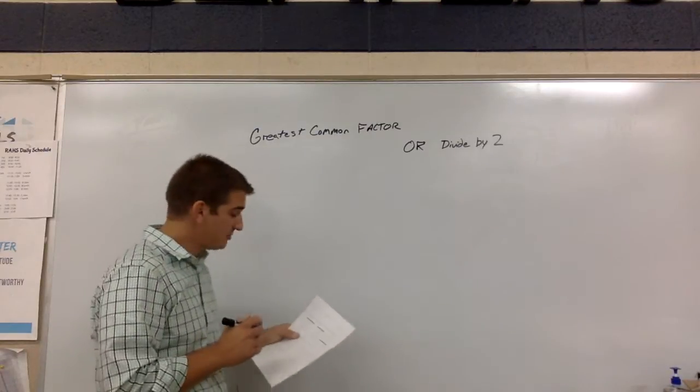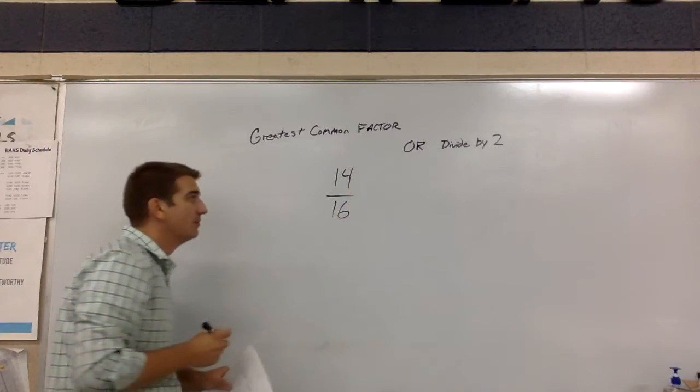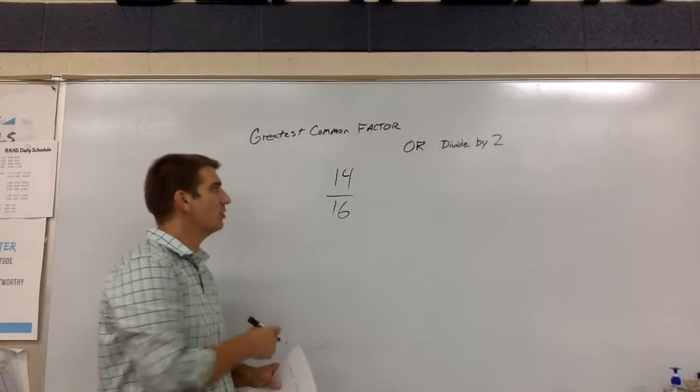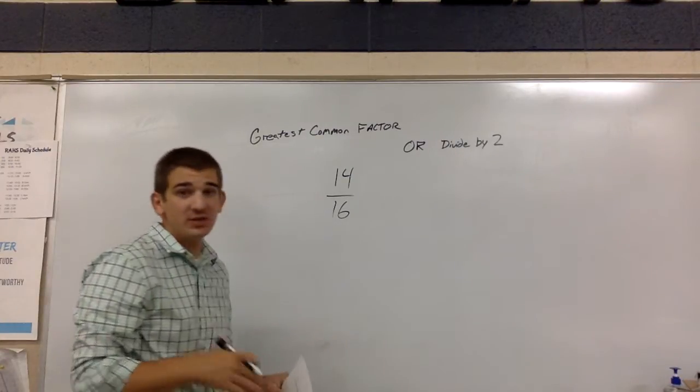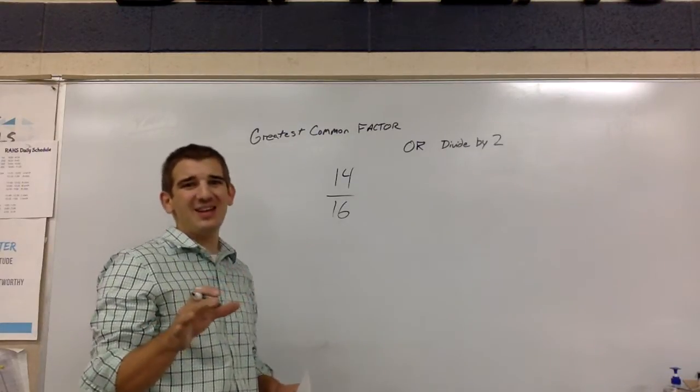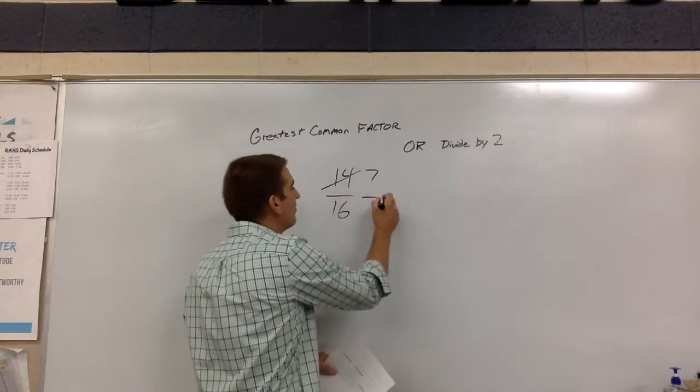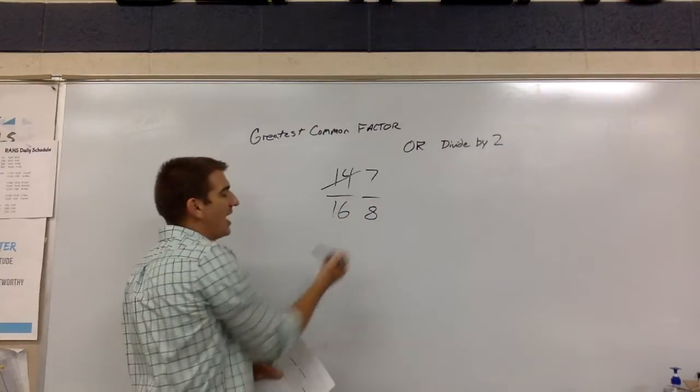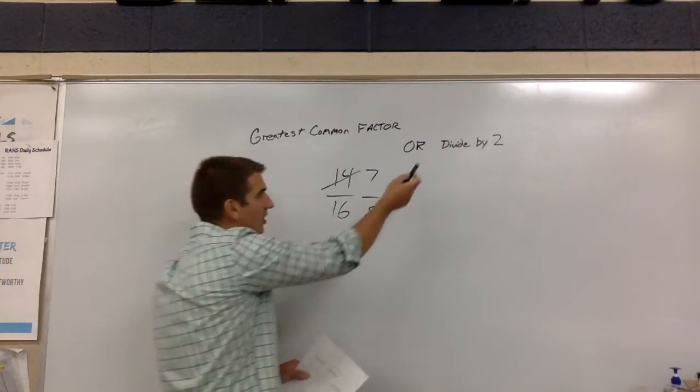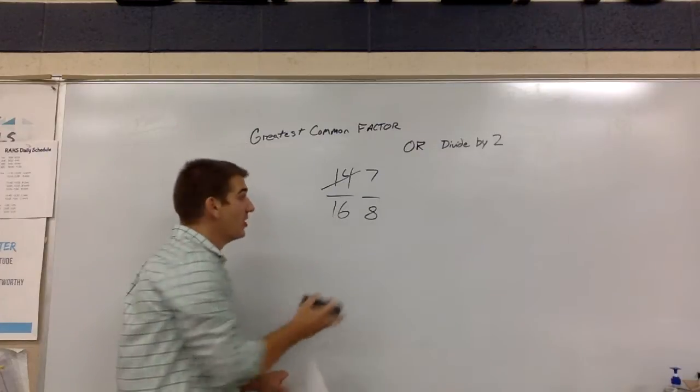Number two. You got free answers here just by watching this video. The fraction is 14 over 16. Now in this case, the greatest common factor is two. Two goes into 14, two goes into 16. So we divide that by two. And again, dividing by two just means we're cutting it in half. We cut each number in half. You get seven, you get eight. You got an odd number on top, you have reduced it as far as you can. So in this case, greatest common factor and divide by two was the exact same thing. So there's one free answer.